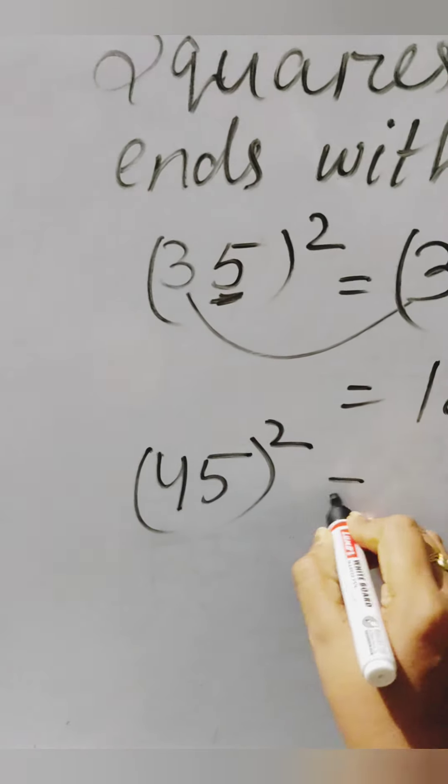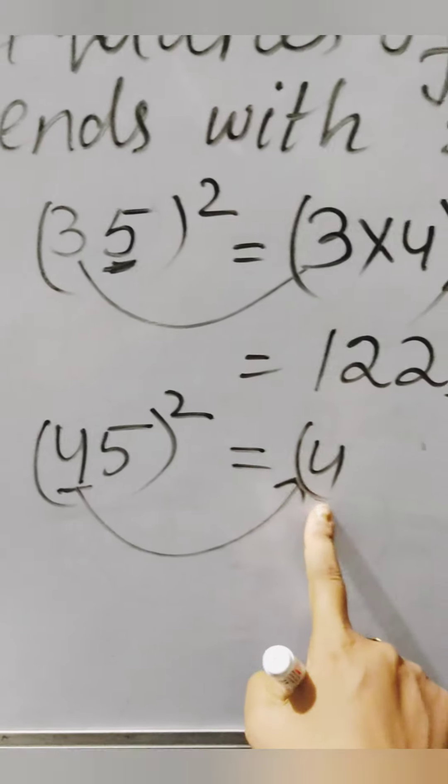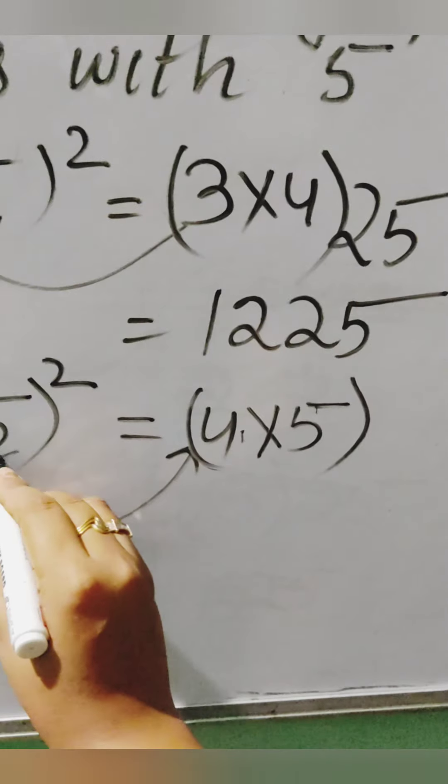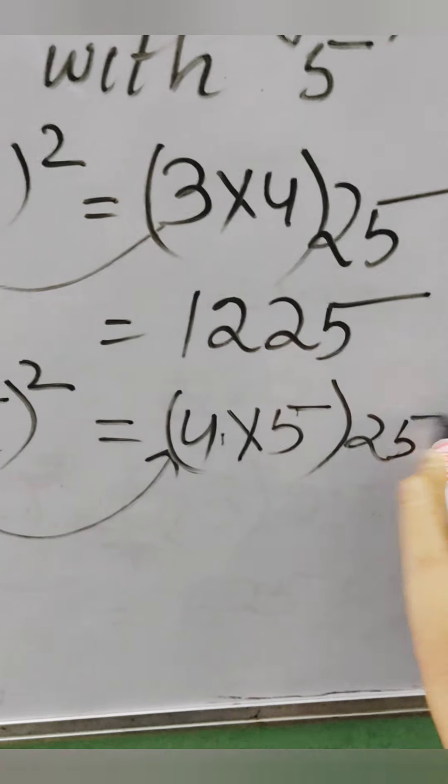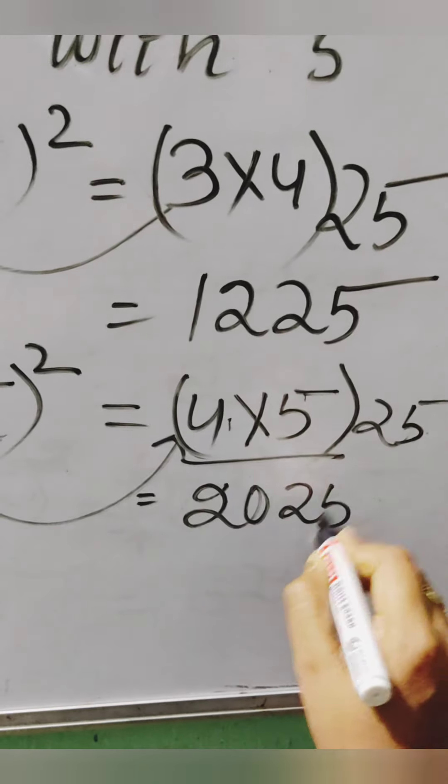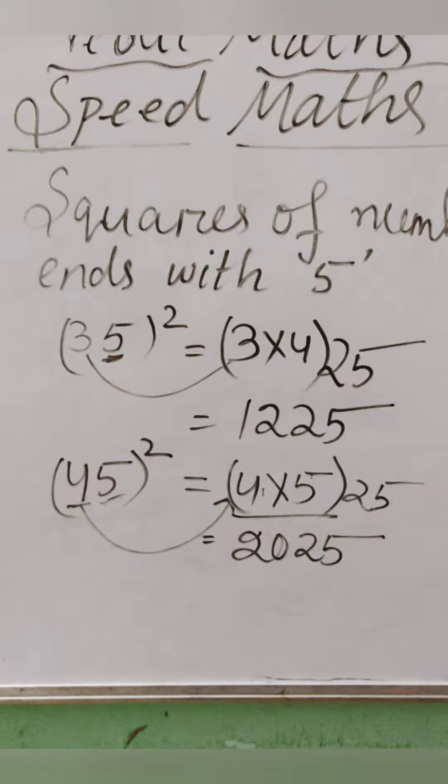Next, 45 squared. So in the tens case it is 4, and next to 4 is number 5. Write down 5 squared, 25, nearby it. Do not multiply it, just write it down. So the answer is 2025. Now do you get this?